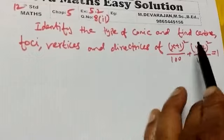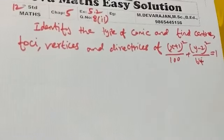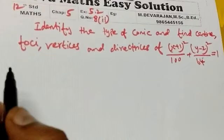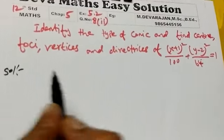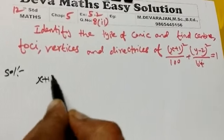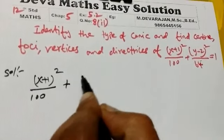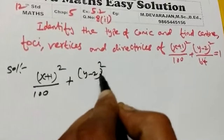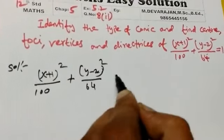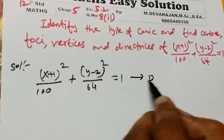Solution: Given equation (x+1)²/100 + (y-2)²/64 = 1. Let's substitute.